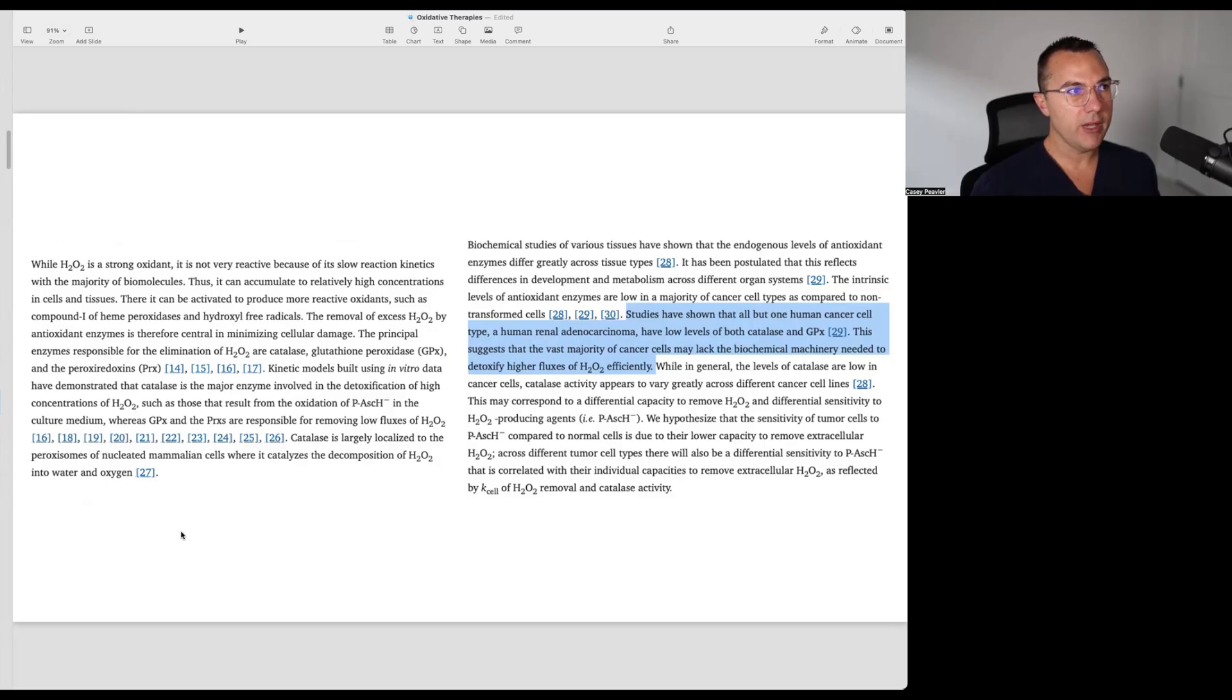The removal of excess hydrogen peroxide by antioxidant enzymes is therefore central in minimizing cellular damage. The principal enzyme responsible for elimination of hydrogen peroxide is catalase, glutathione peroxidase, and the peroxiredoxins PRX. Kinetic models built using in vitro data have demonstrated that catalase is the major enzyme involved in the detoxification of high concentration of hydrogen peroxide, such as those as a result from the oxidation of L-ascorbic acid. In the culture medium where glutathione peroxidase and peroxiredoxins are responsible for removing low fluxes of hydrogen peroxide, catalase is largely localized in the peroxisomes of nucleated mammalian cells where it catalyzes the decomposition of hydrogen peroxide into water and oxygen.